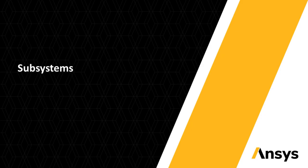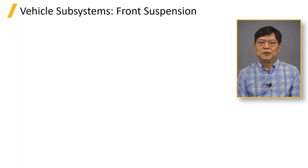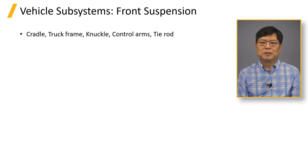Hello everyone, let's review a few key points in the front suspension subsystem. Key parts in the suspension are the cradle, the frame in truck applications, knuckles, control arms, and tie rod. The suspension provides ride and handling characteristics of a vehicle.